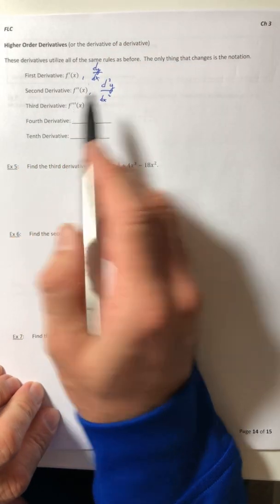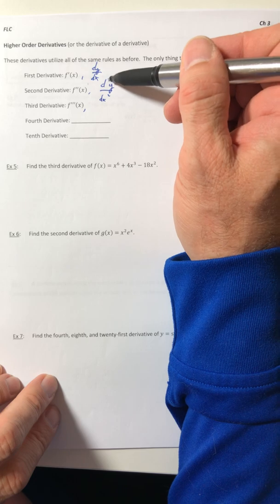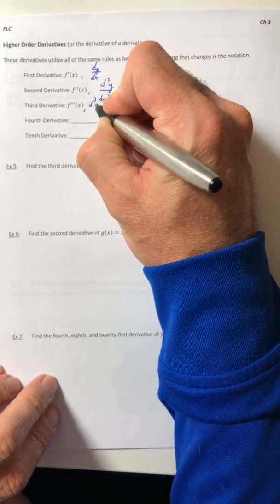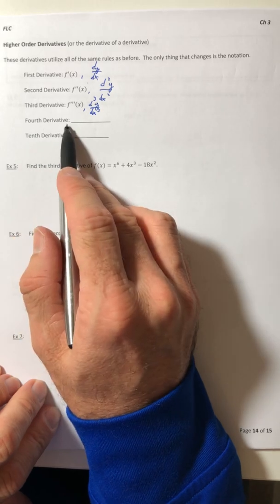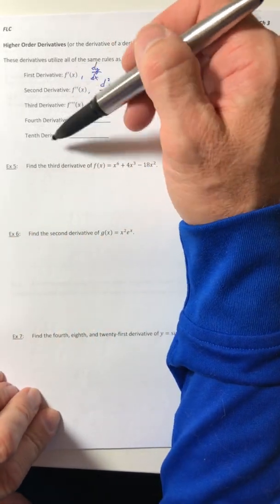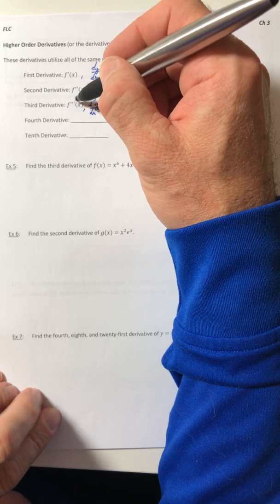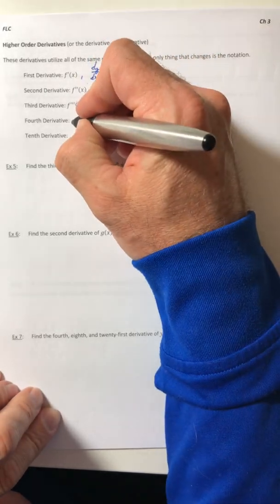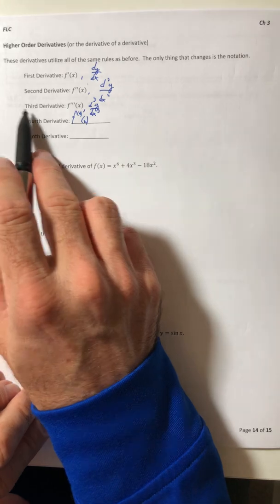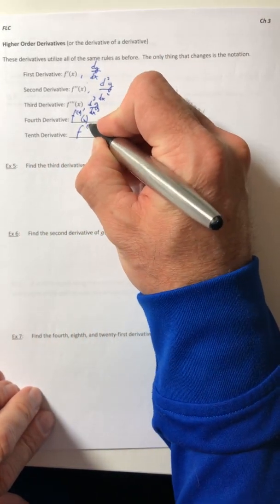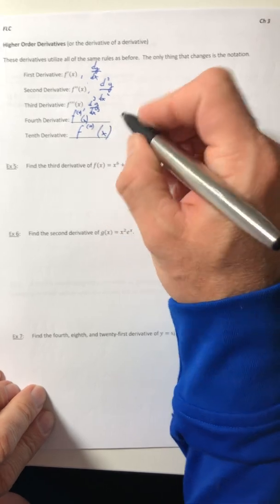Third derivative, they snuck another prime in there. So f triple prime. And then they're going to follow that same pattern for this dy/dx step. So instead of a two, they would be threes. So d³y all over dx³. Fourth derivative, fifth, sixth, anything beyond the third. Instead of sticking another prime in there, they started just to list out however many primes were in there. So that would be f and then parentheses four up there of x. Otherwise, you don't want to string out all these primes all the way across. So the tenth derivative, you have a little ten in the exponent spot just with parentheses around it, of x.